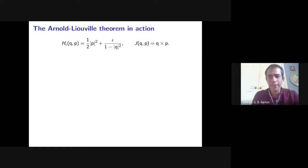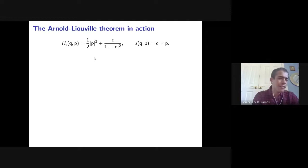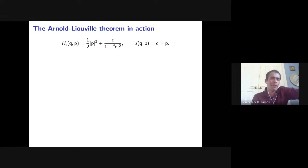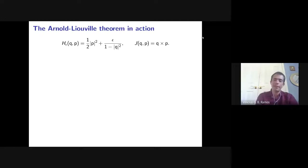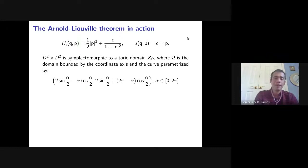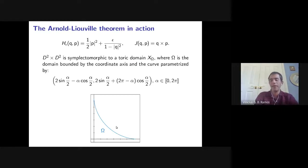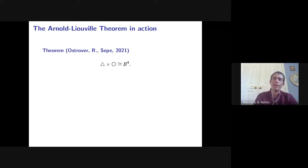For the bi-disc, the two Hamiltonians are: kinetic energy with a potential modelling billiard reflection at the disc boundary, and angular momentum L = q₁p₂ − q₂p₁ as the commuting integral. Applying Arnold-Liouville yields a symplectomorphism to a concave toric domain (with a somewhat complicated explicit formula). The hardest step in these calculations is finding the right system of closed curves for the homology.